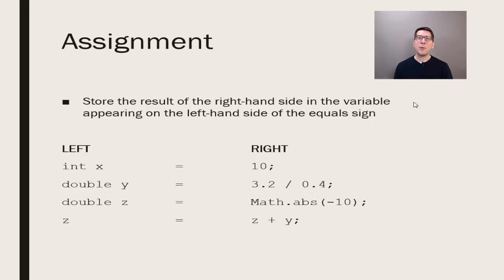Then we follow the order of operations to complete any arithmetic, or step into method calls to retrieve the outcome of that method call. Only when the expression is reduced to a single result is it assigned to the variable on the left-hand side.